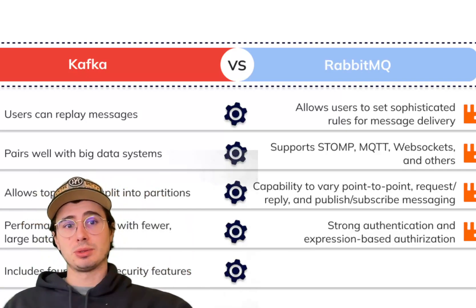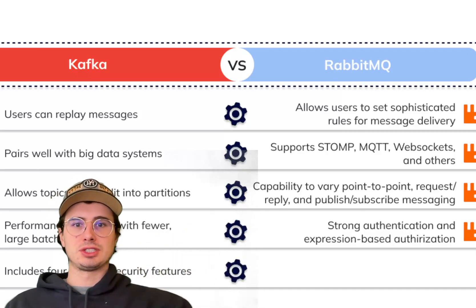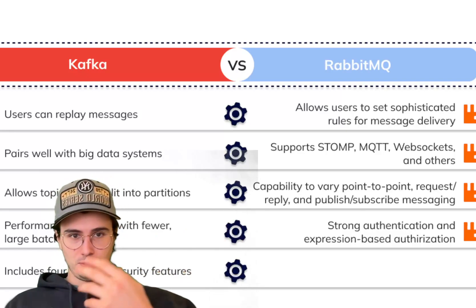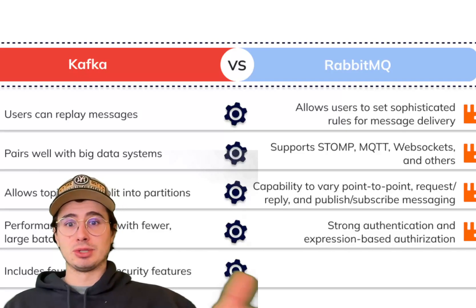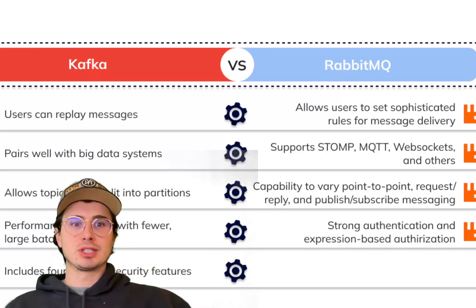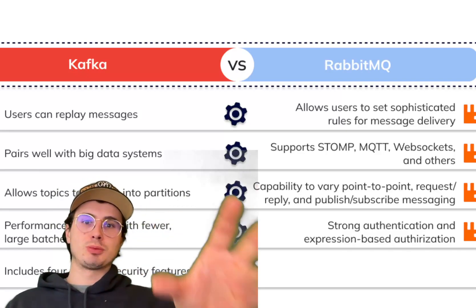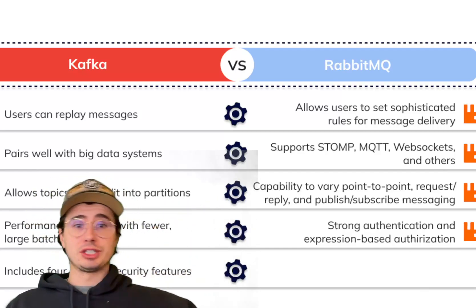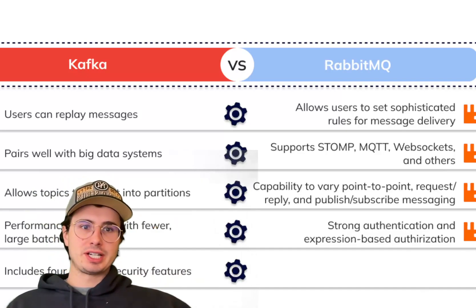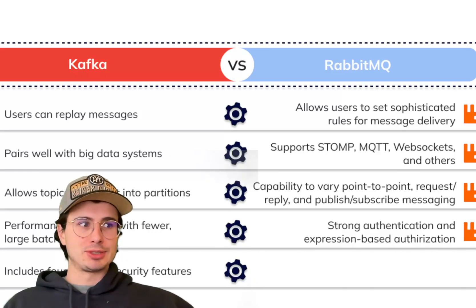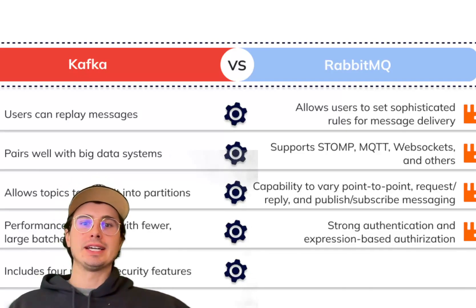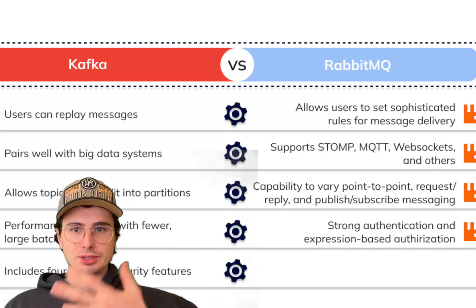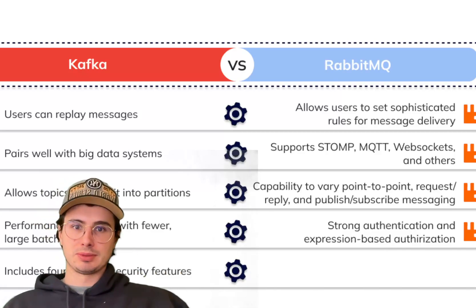RabbitMQ uses a queue-based architecture where producers send messages to exchanges, and exchanges route those messages to one or more queues. Consumers retrieve messages from those queues, and RabbitMQ offers acknowledgement mechanisms to ensure reliable delivery — essentially confirming that a consumer received the message it was supposed to. While it supports durable queues for persistence, its default operation is optimized for in-memory message handling, prioritizing speed while trading off long-term storage.